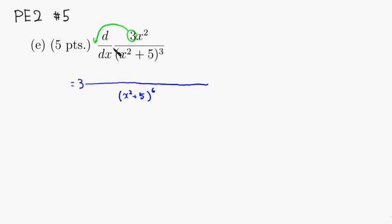Then take the derivative of the top, which is 2x, since I'm just looking at the x squared, so maybe I'll indicate that, so I'm just looking at that, times the denominator, which is x squared plus 5 cubed.